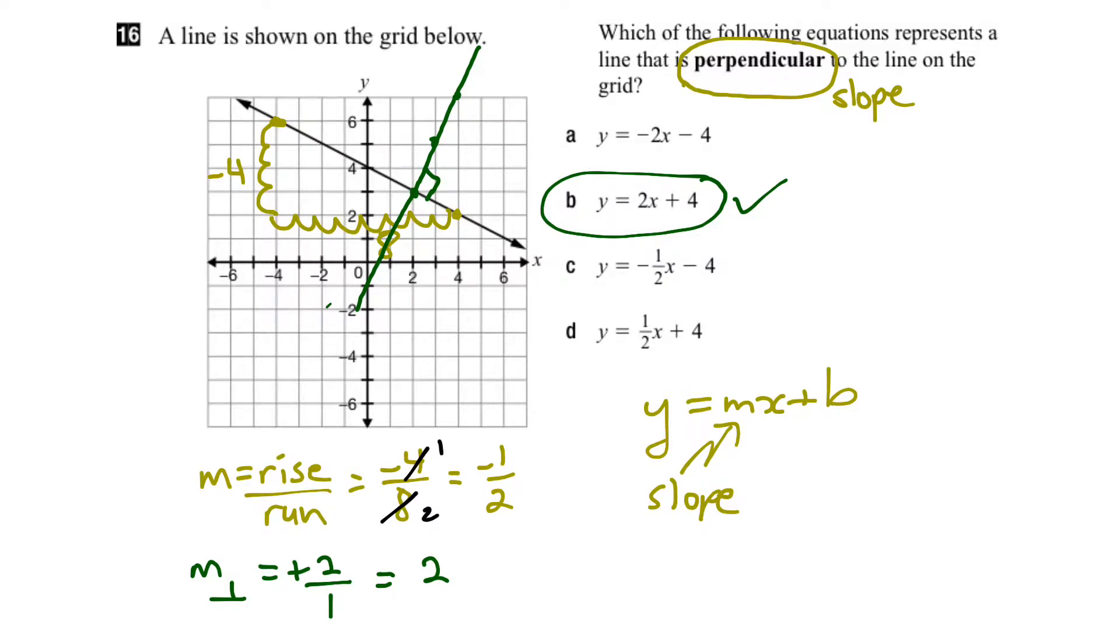Now one of the things to point out is it really doesn't matter what the y-intercept is in this case, because you can have an infinite number of perpendicular lines drawn to this line, like here and here and here, etc. Each of these lines would have a different y-intercept, but they would all have the same slope.